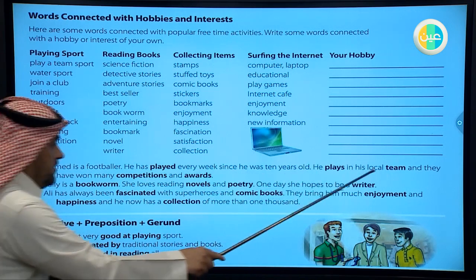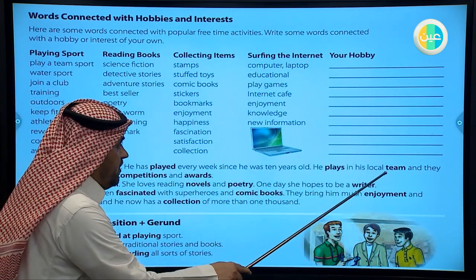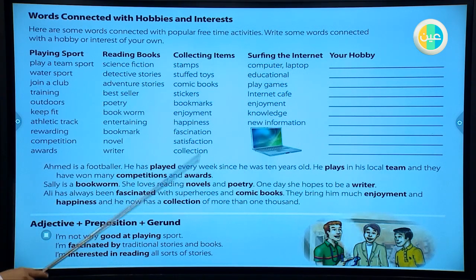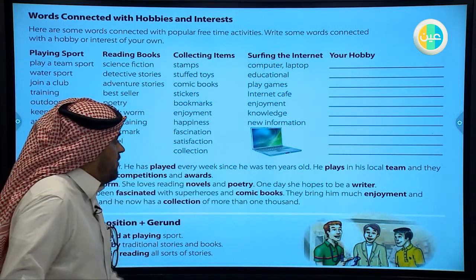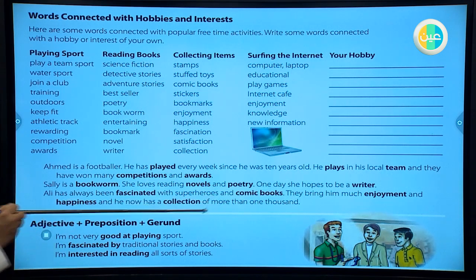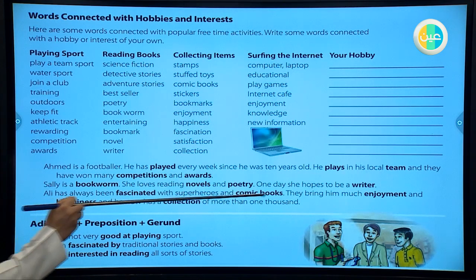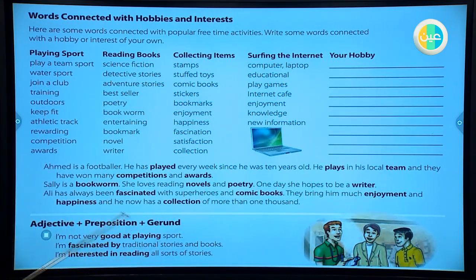Notice that 'played' is in the past participle because it is used after 'has.' 'Team' is a noun, 'competitions' is a noun, 'awards' is a noun - knowing the part of speech is very important. Another example: 'Sally is a bookworm' - she loves reading books a lot. 'She loves novels and poetry. One day she hopes to be a writer.' Also: 'Ali has always been fascinated with superheroes and comic books' - this is the topic sentence. 'They bring him much enjoyment and happiness and he now has a collection of more than 1000.'